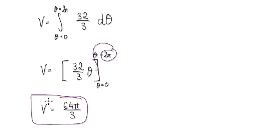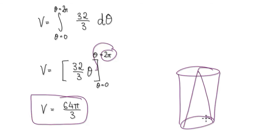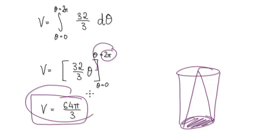And then you can use high school maths to confirm this. The volume of a cone is given by pi r squared divided by 3. Well, the volume is given by this.